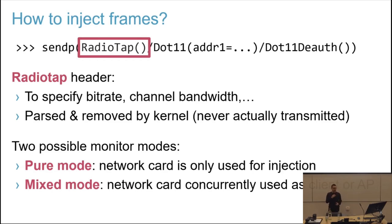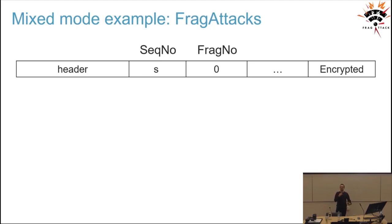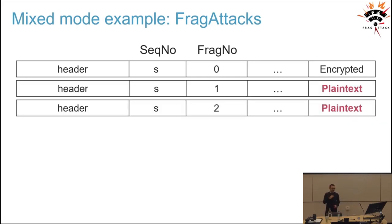This is very convenient because you can use built-in functionality of Linux to connect to a network, and once you're connected you can use that same network card to start injecting frames. This is something we did previously in the frack attacks — there was an attack where we first connected to the network, then injected an encrypted fragment. This was easy to implement because we reused Linux functionality to connect, then send a normal encrypted fragment, followed by two plaintext fragments. The receiver would not realize some fragments were encrypted and some plaintext, and would just combine them.